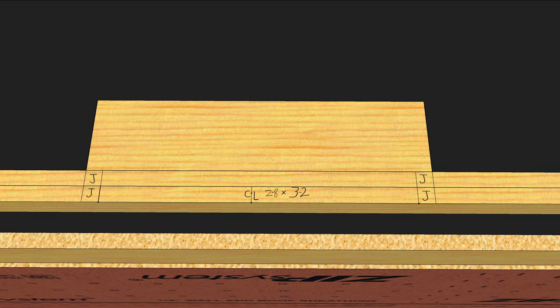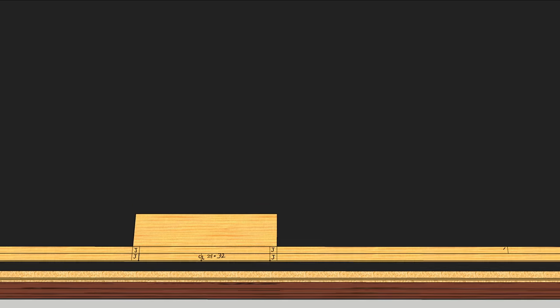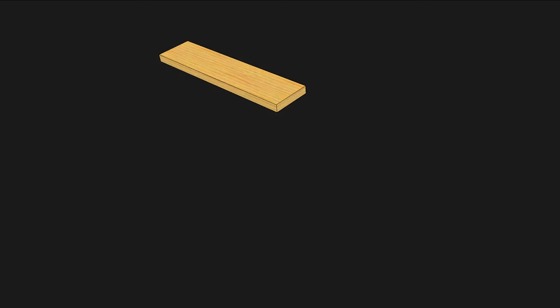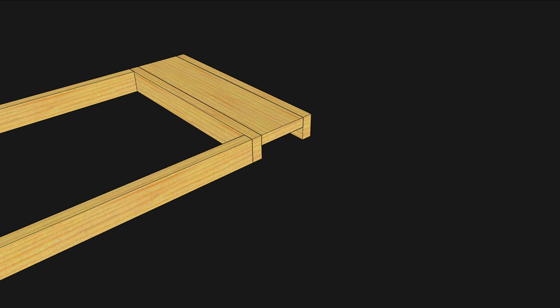The header needs to be the rough opening plus three inches, which is the width of two jack studs. Headers usually have plate stock above and below them for full bearing for the jack studs below and the cripple studs above.